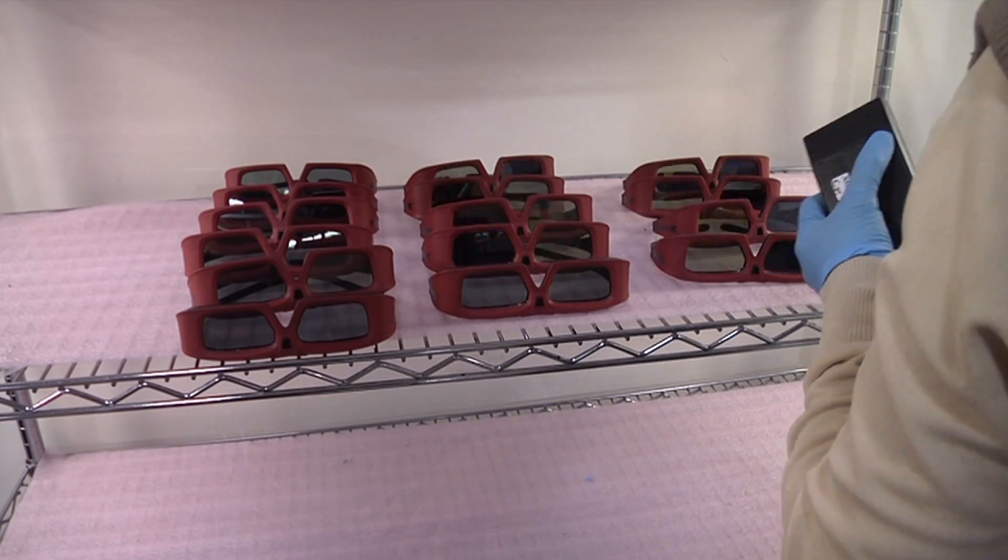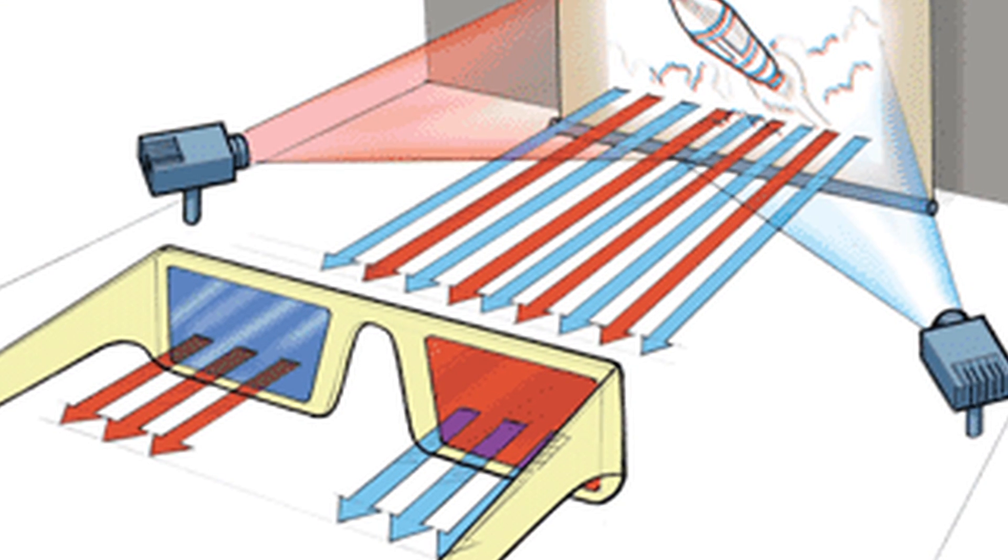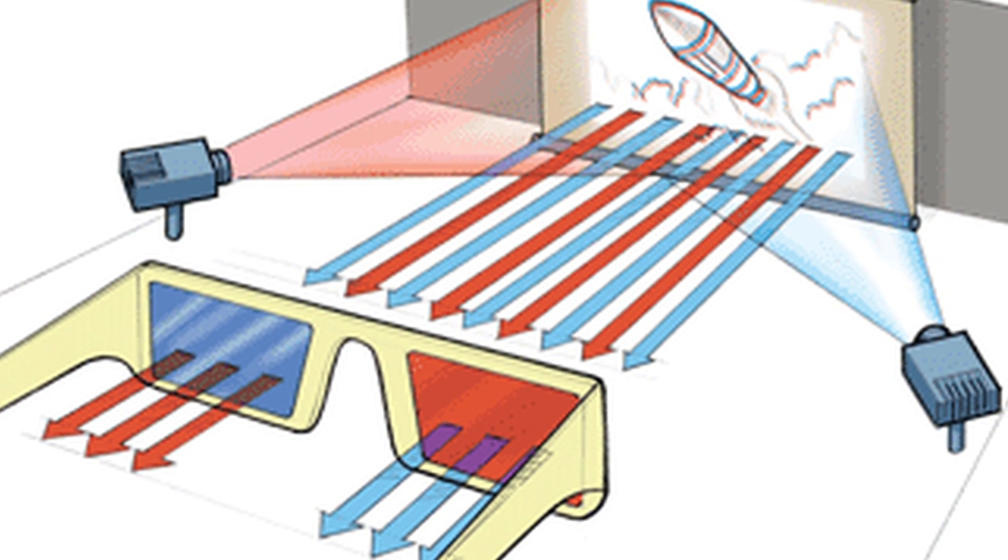The other system was a polarized system with passive glasses using two projectors—one projector for the right image and the other one for the left image. That works pretty well, but you can't, with polarized glasses, block the unwanted image as well, so you tend to see a little bit of ghosting.